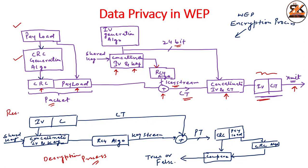At the receiver side, the IV and ciphertext are received. The receiver concatenates the key with the IV and feeds it into the RC4 algorithm to get the key stream. The key stream is XORed with the ciphertext to recover the plain text, which contains the CRC and payload. The receiver recalculates the CRC and compares it with the received CRC — if they match, the communication is error-free; if not, the data has been altered.